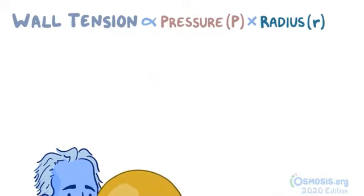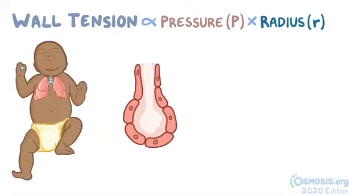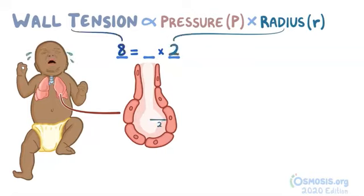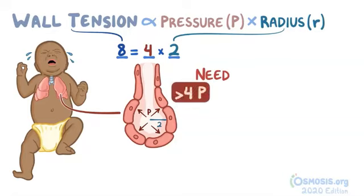An example of this can be seen in the alveoli in the lungs of a newborn. Let's plug in some easy imaginary numbers and forego units to make this concept easier to understand. Normally, an unused alveolus in a newborn is collapsed. So let's say it has a radius of 2 and the wall tension is 8. The baby starts crying and inhales. The pressure of the inhaled air in the alveolus is 4. So our equation is 4 times 2 which gives us 8. And since this is the same as the wall pressure, the alveolus doesn't expand. In other words, the baby will need to breathe in enough air to generate greater than 4 units of pressure to inflate it.